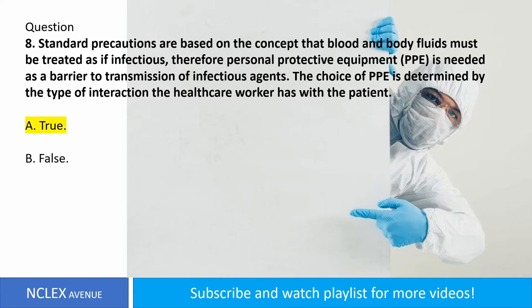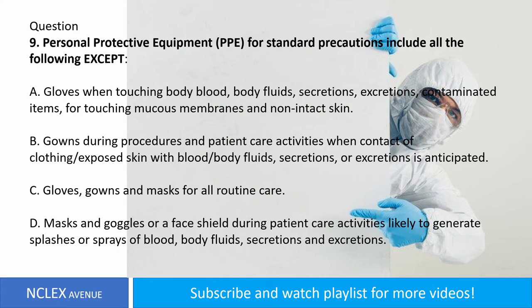Question number nine. Personal protective equipment (PPE) for standard precautions includes all the following except: A. Gloves when touching blood, body fluids, secretions, excretions, contaminated items, or touching mucous membranes and non-intact skin. B. Gowns during procedures and patient care activities when contact of clothing or exposed skin with blood/body fluids, secretions, or excretions is anticipated. C. Gloves, gowns and masks for all routine care. D. Masks and goggles or a face shield during patient care activities likely to generate splashes or sprays of blood, body fluids, secretions and excretions. Answer: letter C.